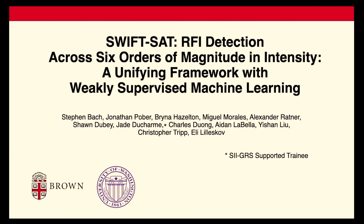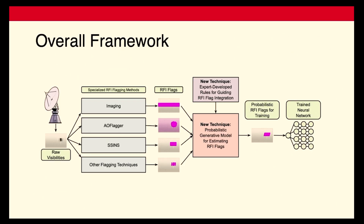I'm Steven Bach, representing the Brown and University of Washington SWIFT-SAT project on developing machine learning methods for detecting RFI in radio astronomy observations. Our goal is to train a neural network to detect a very wide variety of RFI. RFI detection has been approached traditionally with various non-machine-learning algorithms that specialize in finding different types of RFI. Our approach is to use these algorithms as training data for a neural network that generalizes beyond them, while avoiding the need for hand-labeled training data.